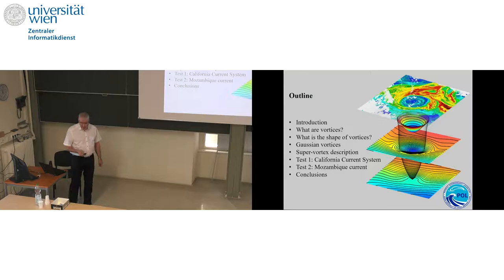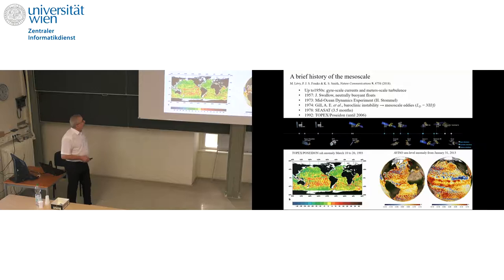This is the short outline of the talk. After introduction, I will shortly address two questions: what are vortices, and what is the shape of vortices, and I will talk about Gaussian vortices as a minimal model of the shape of geostrophic vortices, and then the super vortex description, and two tests I shortly will present with very short conclusions. At any time, please pose any questions, and I would be happy for any critical remarks as well.